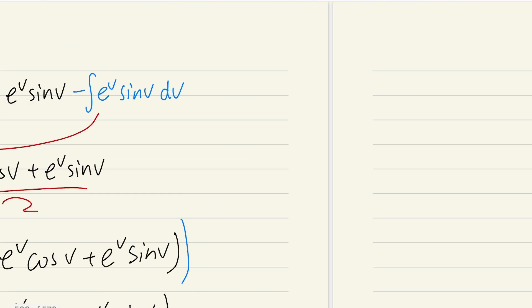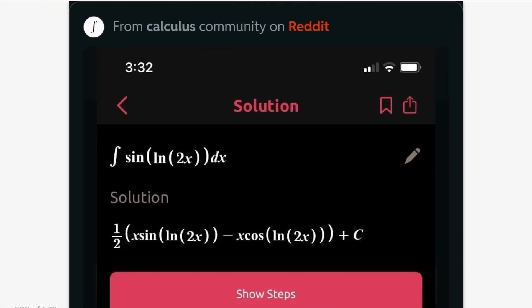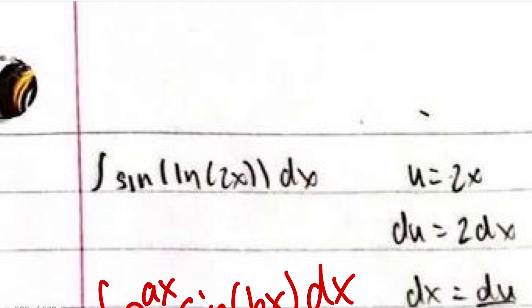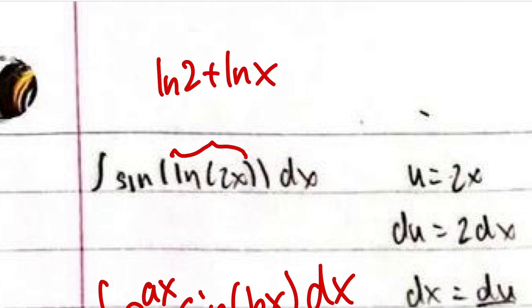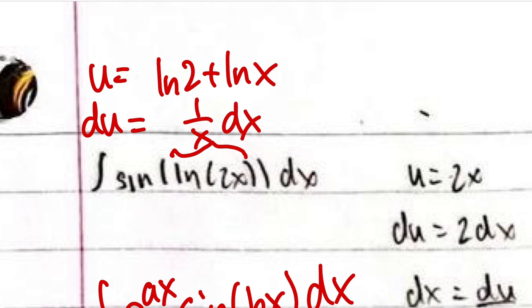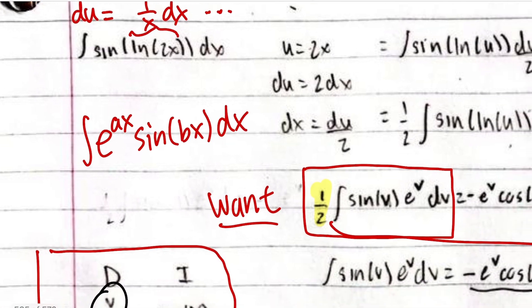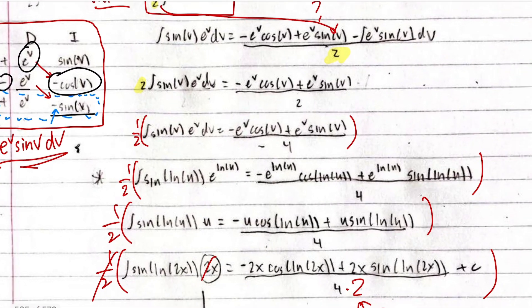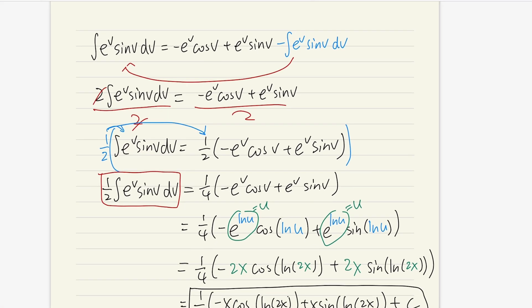There is an easier approach that avoids the 1/2 problem entirely. By the log property, ln(2x) = ln(2) + ln(x). Set u equal to that expression; then du = 0 + (1/x)dx = (1/x)dx, since the derivative of ln(2) is 0. This eliminates the factor of 2 from the start and avoids the tricky 1/2 issue — though that step is left as an exercise.